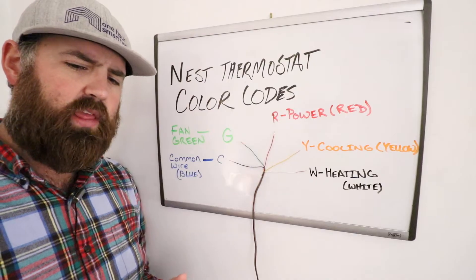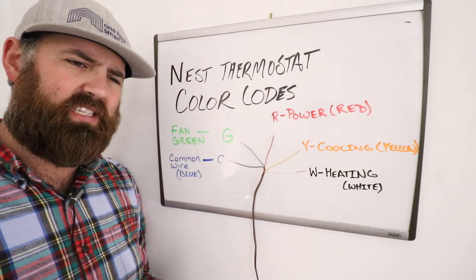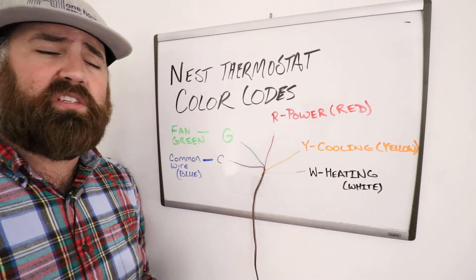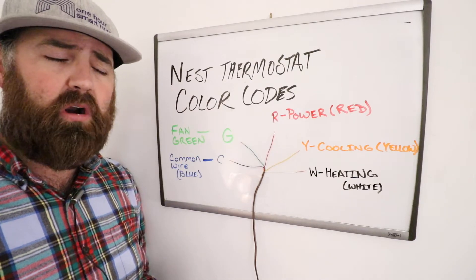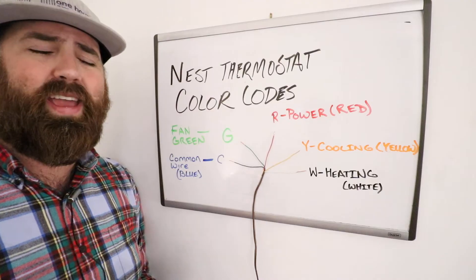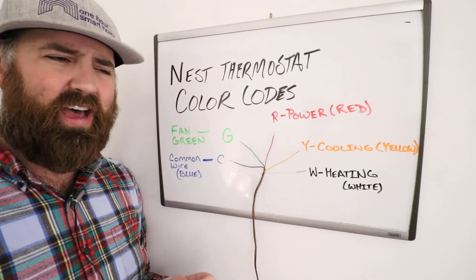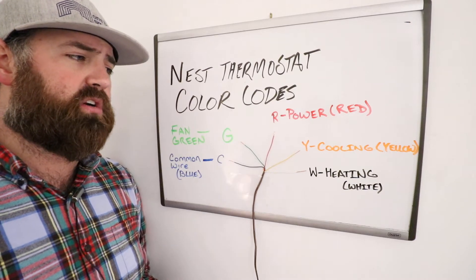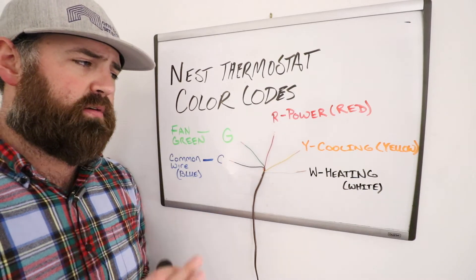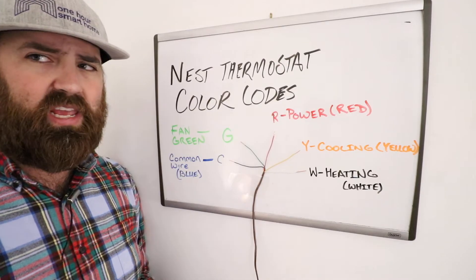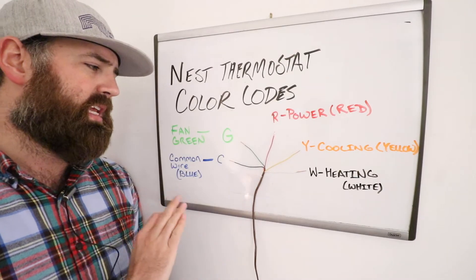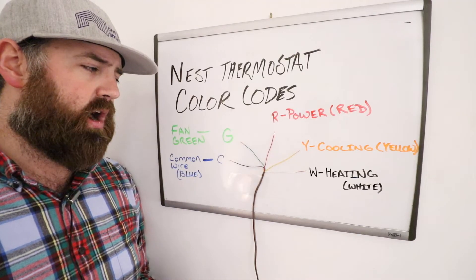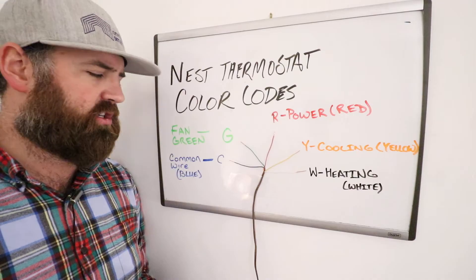So you can set the Nest thermostat to turn on the fan and circulate it constantly or once every 15 minutes per hour or once every 30 minutes per hour. And doing that will help kind of even out the heating and cooling throughout your home if you're having issues with that. So the fan will automatically turn on whenever your thermostat calls for cooling or calls for heating. That's why you don't necessarily need the G-wire, but if you have one, you should definitely install it. Put the green wire or G-wire into the Nest G-wire terminal.